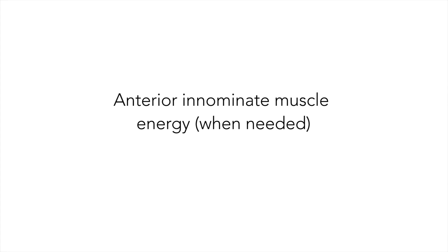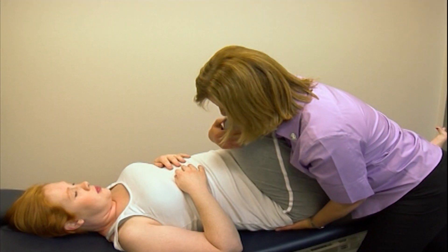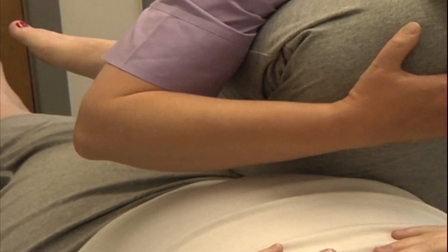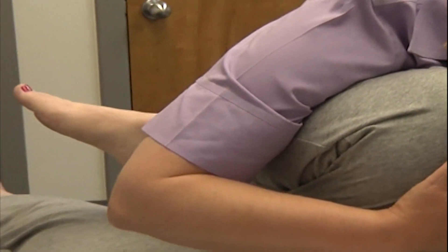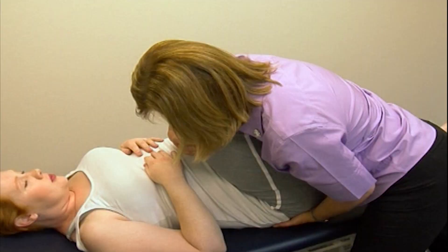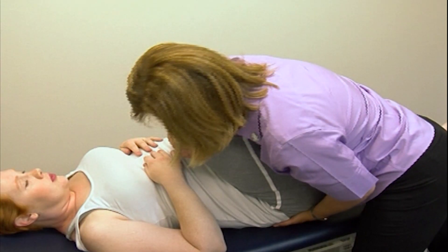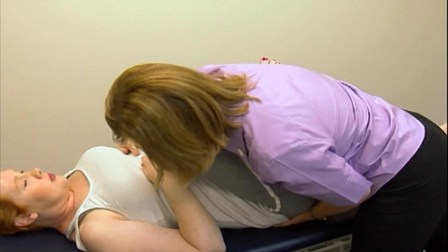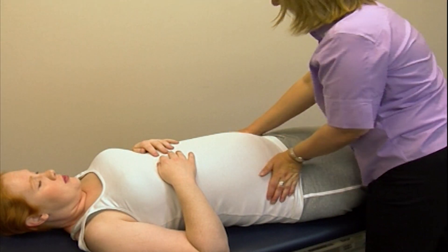Anterior innominate muscle energy. For this technique, the leg on the side of the anteriorly rotated innominate is flexed at the knee and hip. The contact is on the ipsilateral PSIS and ischial tuberosity, with the subject's knee resting against the physician's chest. The leg and hip is flexed to the restrictive barrier of the innominate. Then the subject's effort is to push her knee against the physician's chest for three to five seconds. After relaxation, the innominate is taken to a new barrier and the force is repeated three to five times. The subject's leg is then returned to neutral and the innominates are reassessed using the pelvic compression test.